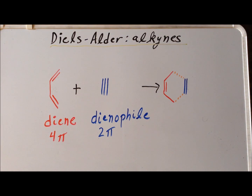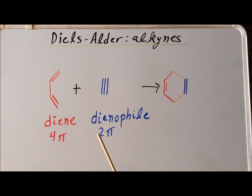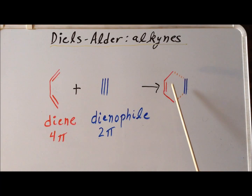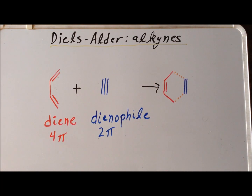It is possible to use an alkyne as the dienophile in place of an alkene, because an alkyne has the minimum two pi electrons. Notice that in this specific case, because electrons are transferred from the triple bond to form one of the sigma bonds, this bond is reduced in order from a triple bond to a double bond. In the process, we have a new product that now has two double bonds — we have a cyclodiene, specifically 1,4-cyclohexadiene.